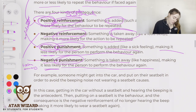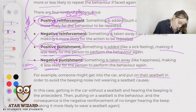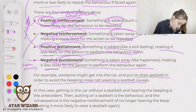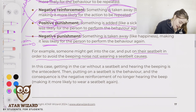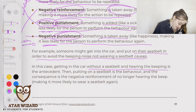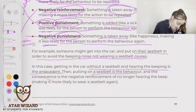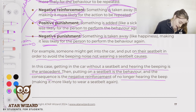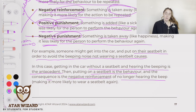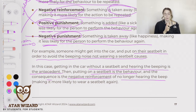For example, someone might get into a car and put on their seatbelt in order to avoid the beeping noise that not wearing the seatbelt causes. In this case, getting in the car without a seatbelt and hearing the beeping is the antecedent. Putting on a seatbelt is the behaviour, and the consequence is the negative reinforcement of no longer having to hear the beep — making you more likely to repeat the behaviour of putting on the seatbelt.